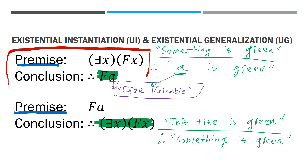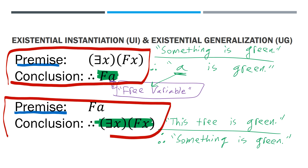With existential instantiation, we start with a quantifier — the existential quantifier — and we remove the quantifier. We have a free variable, and it's very important that it appears nowhere earlier in our proof. With existential generalization, we add a quantifier — we add that 'some', that there exists some x such that x is an f.